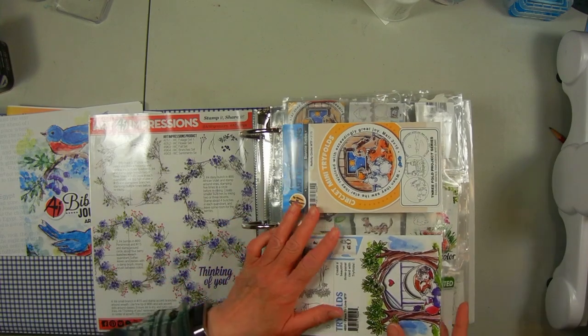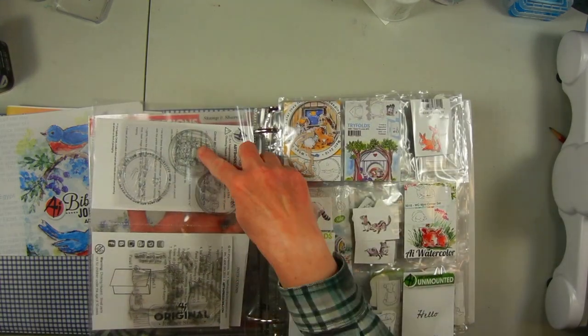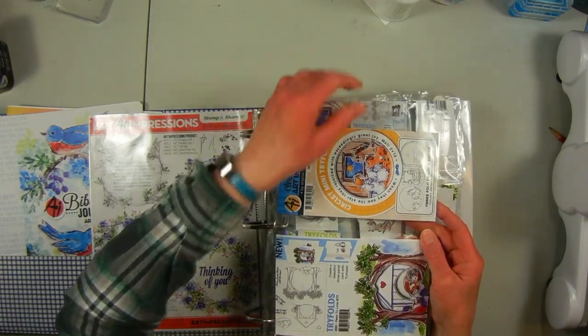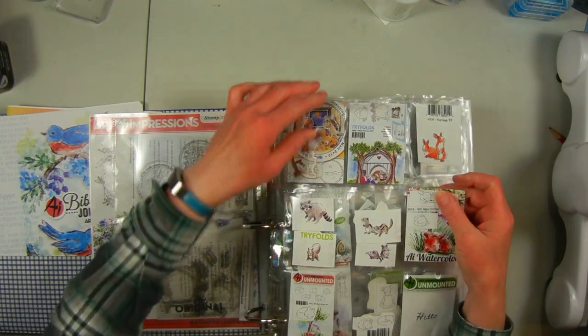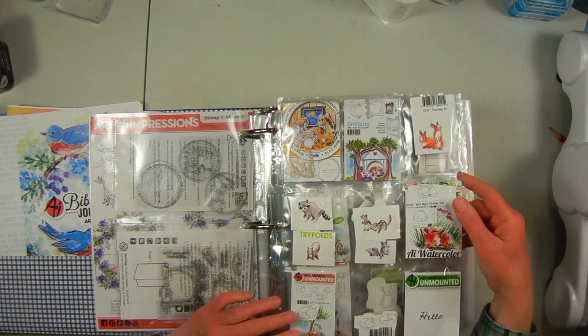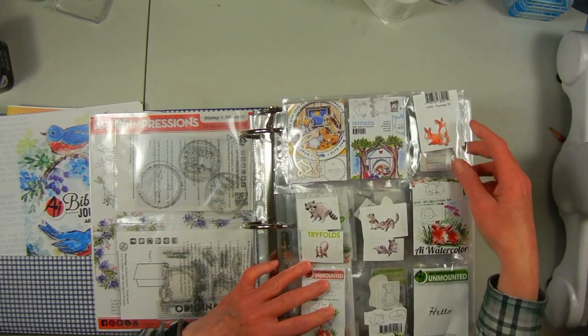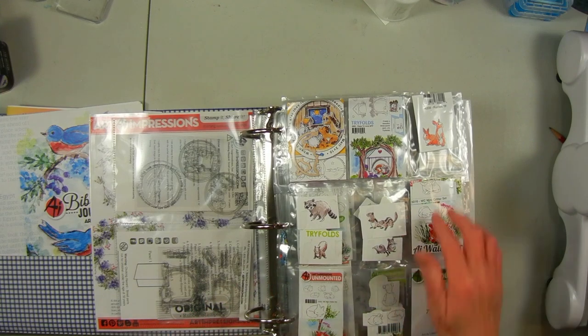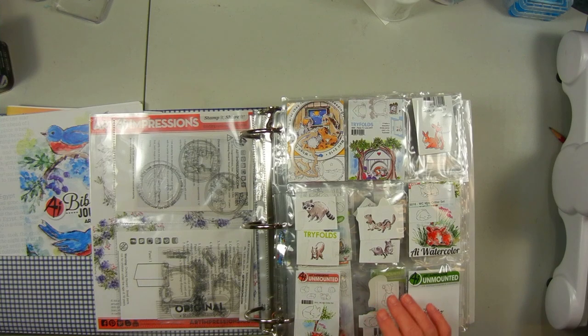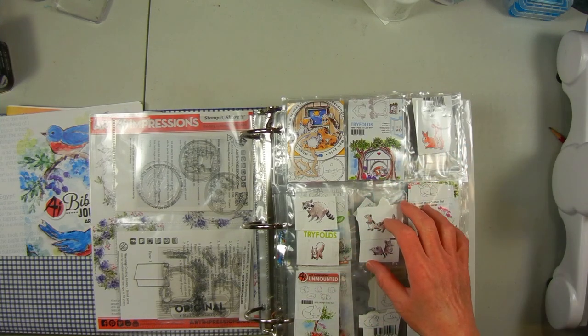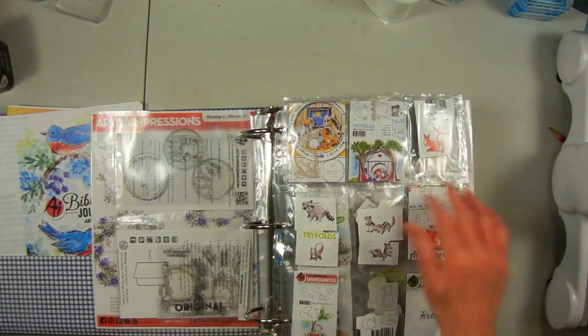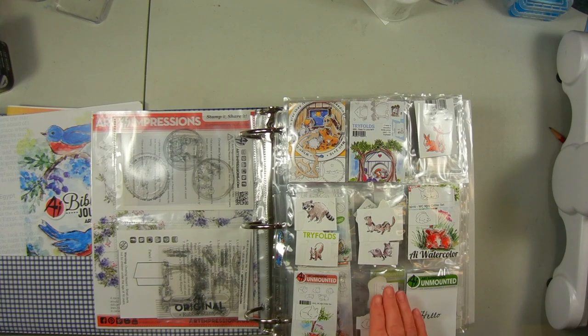This had stamps and then when you turn you can see these are clear stamps. I didn't put the dies with these because as you can see, same problem, things can fall out. So I put the dies, the coordinating dies, on the opposite page. Then we get into the stamps and I try to keep them in their sets.